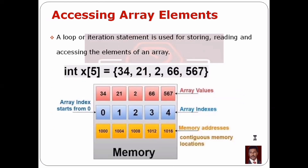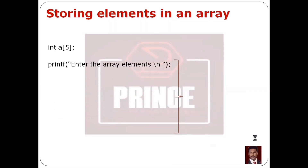Next is accessing array elements. A loop or iteration statement is used for storing, reading, and accessing the elements of an array. We can use any loop. For example, a[5] is declared — type is integer, A is the name, 5 is the size — then we store 5 integer numbers in the array.